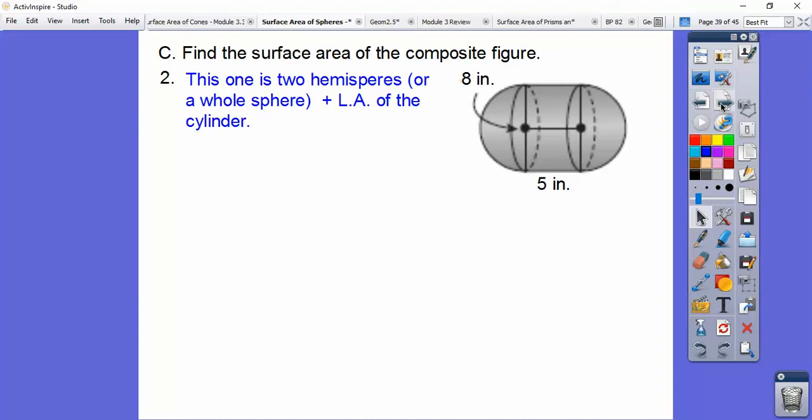So this one is two hemispheres, or one whole sphere, plus the lateral area of the cylinder. So we plug that in, we get that, and just make sure you crank it out correctly, and we get 104π inches squared, which is about that in decimal.